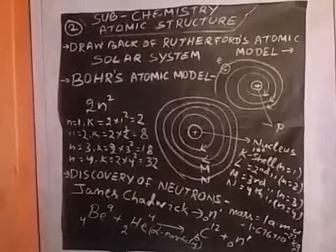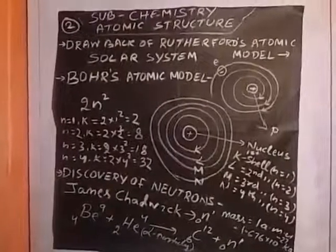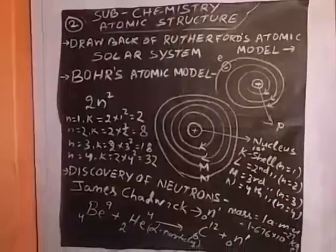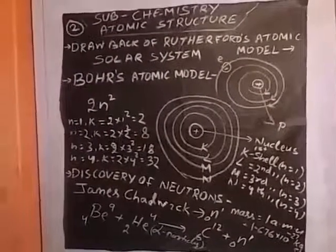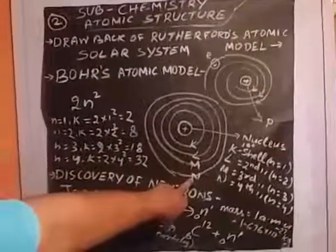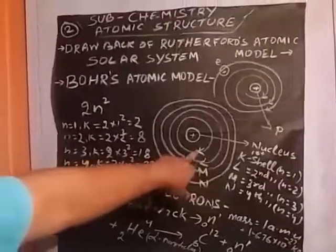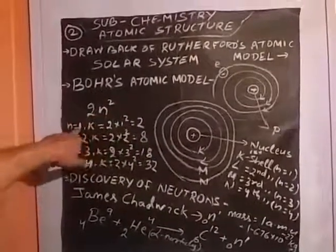That is the drawback of Rutherford's. So then Bohr's atomic model. He suggested that the electrons revolve around the nucleus according to their path or orbit or shells. There is the path: first shell is known as K shell, second shell L, third shell M, fourth shell N. Capacity of electrons in K shell according to 2n² formula.